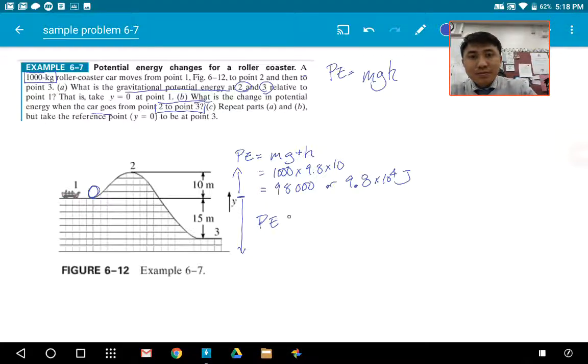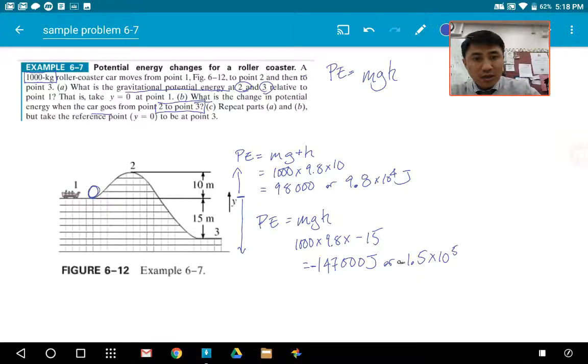So here, the PE is equal to MGH again. This time it's 1,000 times 9.8 times negative 15 meters. So that's going to equal to 1, 4, 7, 0, 0, 0, negative joules. Or if you put in scientific notation, 1.5 times 10 to the 5 negative joules. Pretty easy, right? Just using the formula, it's below where it was, so it's got to be negative. That seems pretty easy. This is part A.